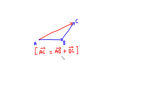The triangle law of vector addition states that when two vectors are represented as two sides of a triangle with the order of magnitude and direction, then the third side of the triangle represents the magnitude and direction of the resultant vector.